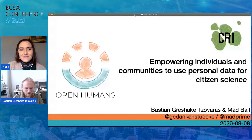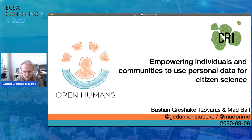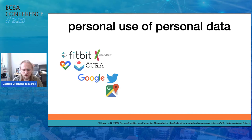The next talk is about empowering individuals and communities to use personal data for citizen science, given by Bastian Savares. This talk fits in nicely with what Andreas just talked about — the use of personal data in citizen science. But here we are going a step further: it's not so much about using personal data for identifying people, but rather using personal data generated by individuals for doing citizen science. This is getting more and more important as all of us create more and more personal data — our Google search history, our location history in Google Maps, our social media use, wearables, and some people even do personal genetics testing.